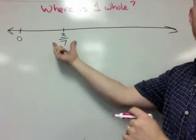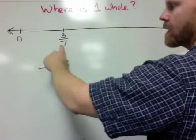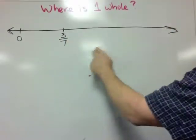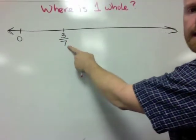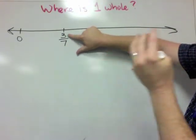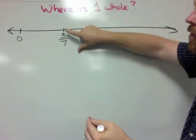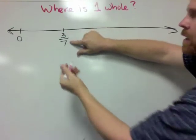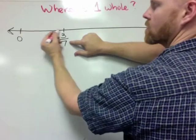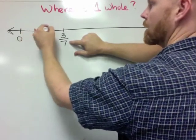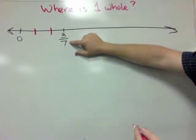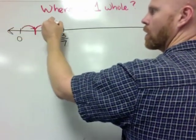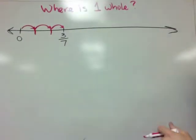The fraction itself gives us a hint. It says that it requires seven intervals to equal one whole — that's what the denominator means — and this three tells us that we are currently looking at three intervals, or three parts, out of the seven. So we're going to take this little section right here and cut it into three equal-sized pieces: one, two, three equal-sized intervals.